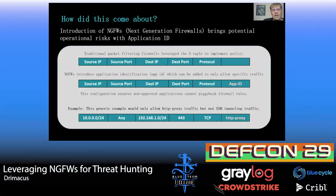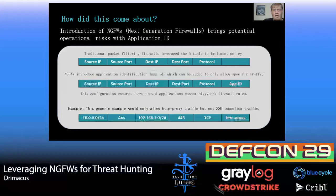With next-gen firewalls, we add application ID, as well as other features such as user identity, which can be used to write firewall rules. In this example, we can apply that only HTTP proxy traffic could be allowed through a rule, meaning application traffic matching SSH could not — thus you can block SSH traffic. You could also put in a rule above that says deny SSH traffic for the application.